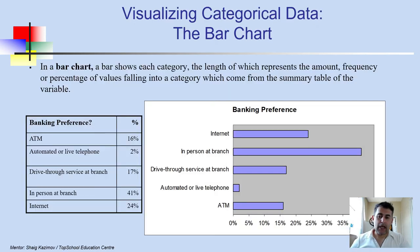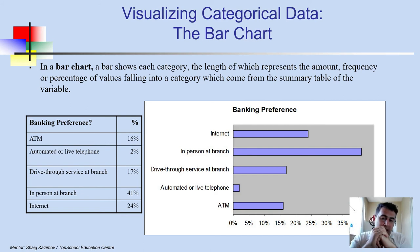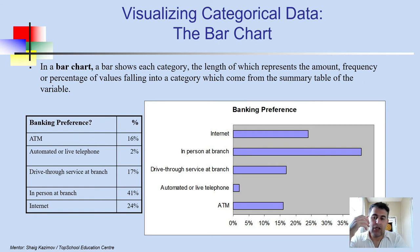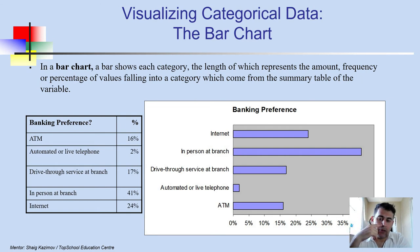Visualizing categorical data: the bar chart. A bar chart shows each category with a bar whose length represents the frequency or percentage of values falling into that category, derived from a summary table. For example, with banking preferences — ATM, automated phone, live telephone, drive-through, in-person at branch, and internet — about 24 people prefer internet banking and 41 prefer in-person at branch.